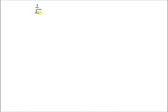The PDF of a standard normal random variable is given by 1 over square root of 2π times e to the power of minus x squared divided by 2. This is also usually represented as N(0,1), which basically stands for a normal distribution with mean 0 and variance 1.